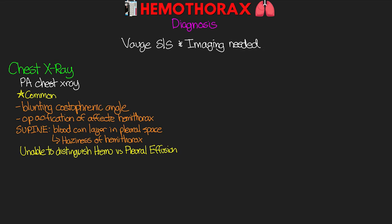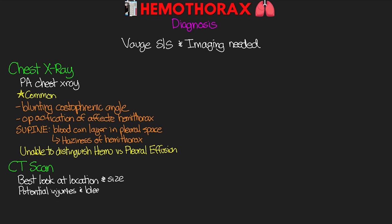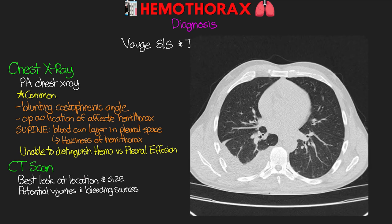The next imaging modality is computed tomography — the CT scan. The CT is going to give us the best look at the location and size of the hemothorax, along with any other potential injury to other structures and potential sources of bleeding. Here is an example of a CT scan where it's pretty obvious — you have the collection of blood on one side, and the rest of the lung tissue clearly visible, compared to the other side which is all lung tissue.